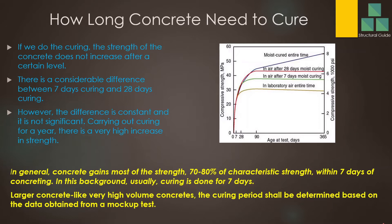How long should curing be done? It depends on many factors. Generally, concrete gains about 70 to 80 percent of its strength by about seven days; the rest of the strength gain is gradual at a slow rate. As the hydration process needs to complete to gain strength, most strength is gained at the early stage. So as a general norm, curing is done for seven days — that is the minimum period we should do curing.